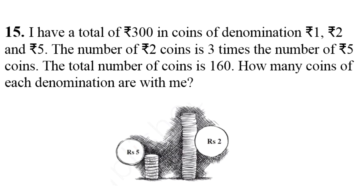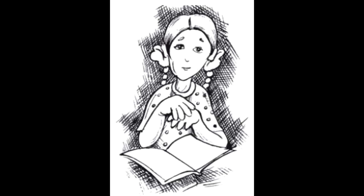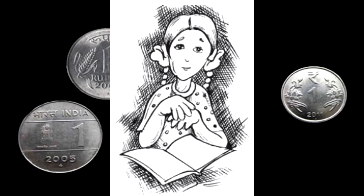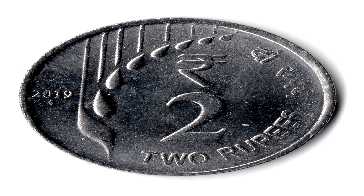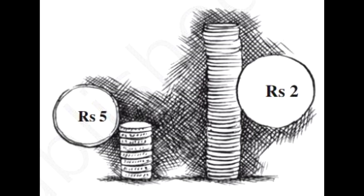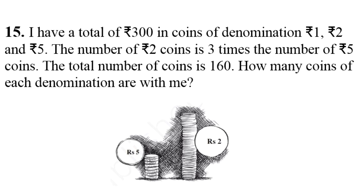Next: I have a total of 300 rupees in coins of denomination 1 rupee, 2 rupees and 5 rupees. The number of 2 rupees coins is 3 times the number of 5 rupees coins. The total number of coins is 160. How many coins of each denomination are with me? मेरे पास 300 rupees के 1 rupees, 2 rupees और 5 rupees वाले coins हैं और total number of coins 160 है।